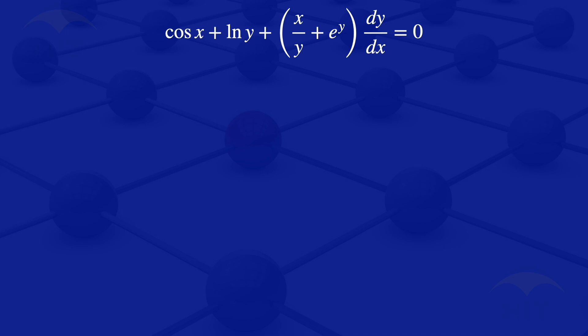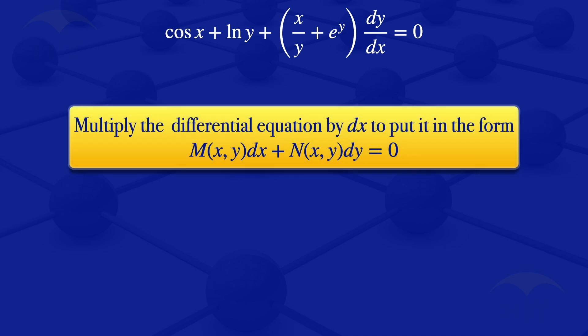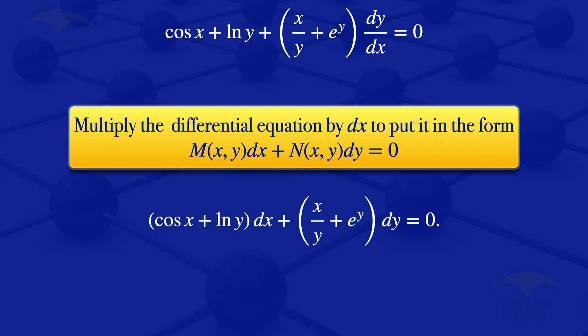Given that equation, I'll start by multiplying throughout by dx so that I put it in the form M(x,y) dx plus N(x,y) dy equals zero. Multiplying through by dx, we obtain: cosine of x plus ln of y, dx, plus x divided by y plus e^y, dy equals zero.